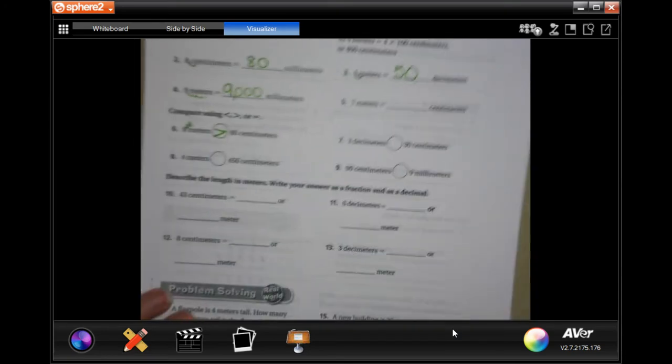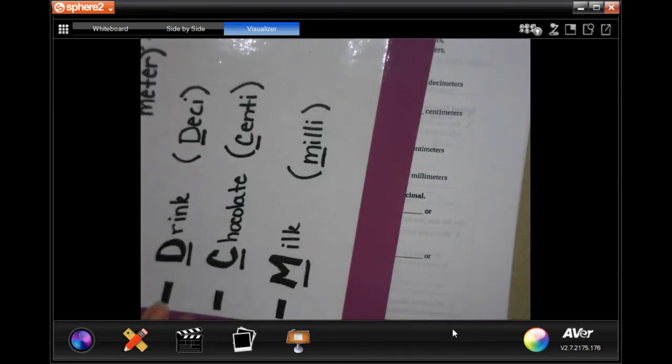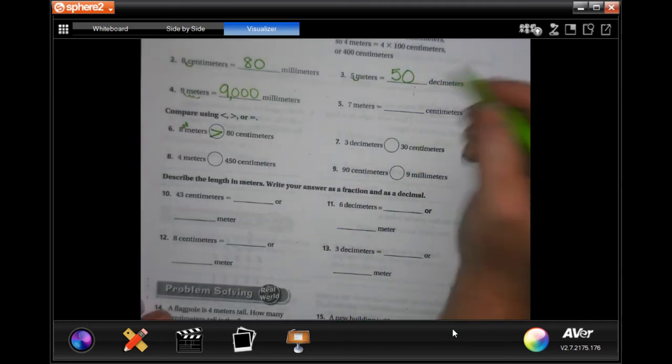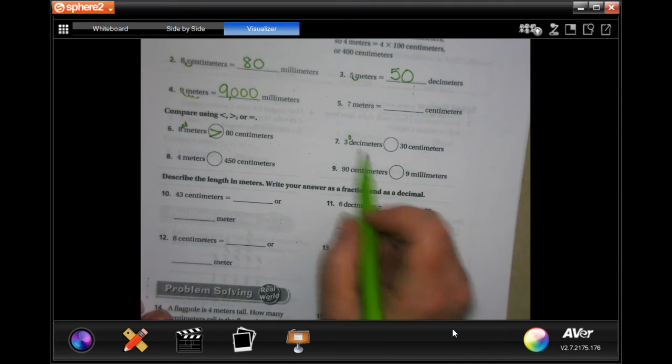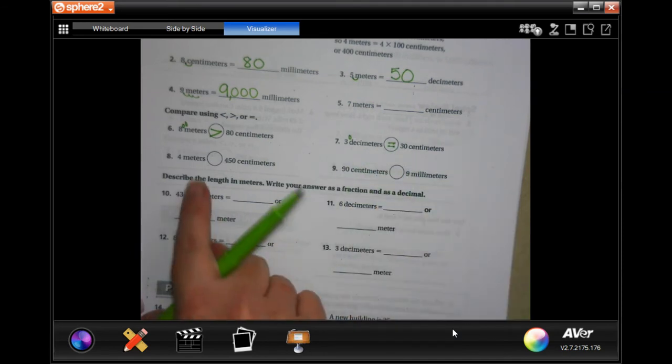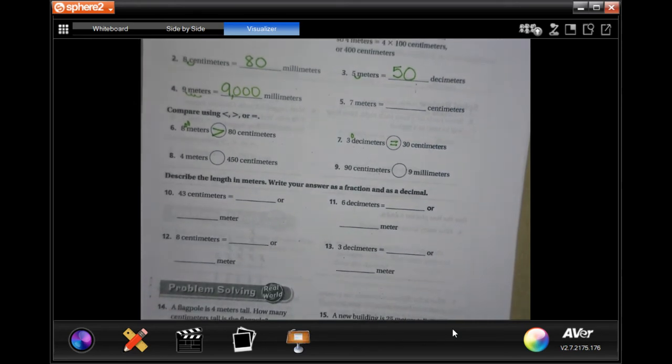That's bigger. Decimeters to centimeters, deci centi, we're going to move it one time which adds on one zero, so 30 and 30 equal. You guys do eight and nine.